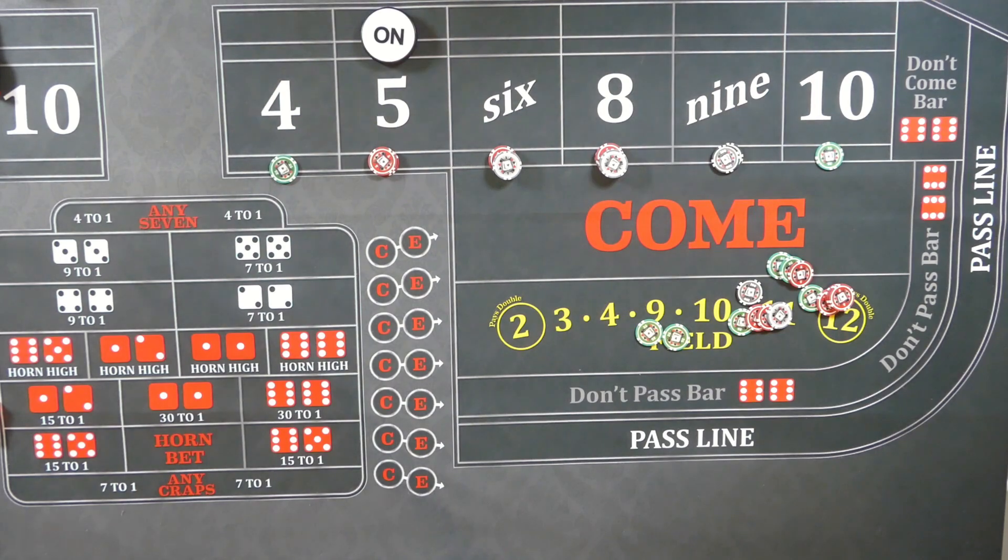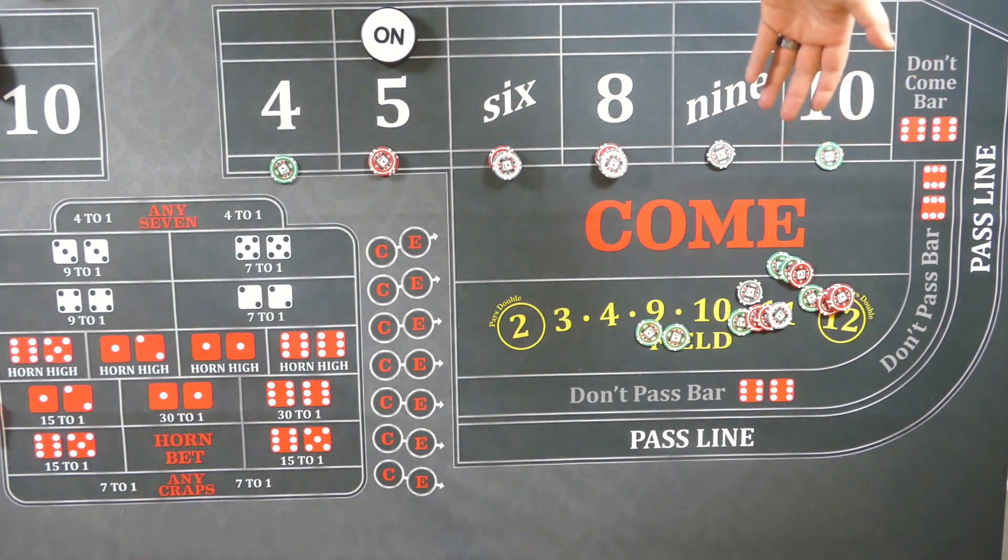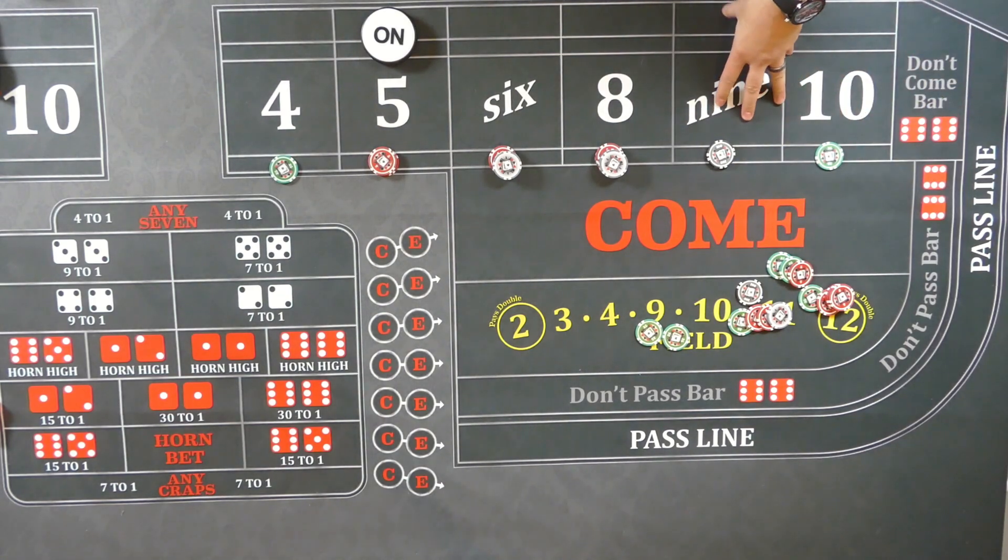And then from here, you may actually start going back into something a little bit closer to a power press. You might stay with a mid-press to go from $200 to say $250 or $350, then $500. Once you can get yourself to $500, then you just go to a standard press: 500, 1000, 2000, until you hit table max, whatever it may be.